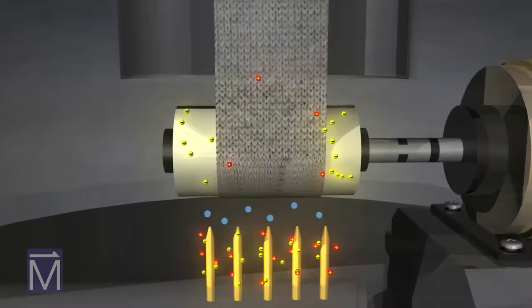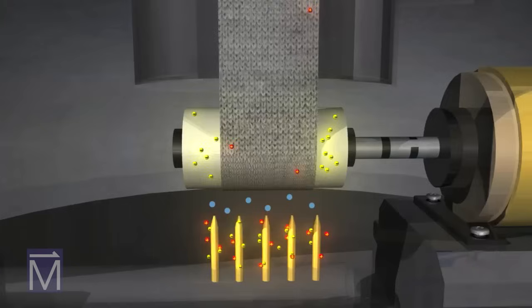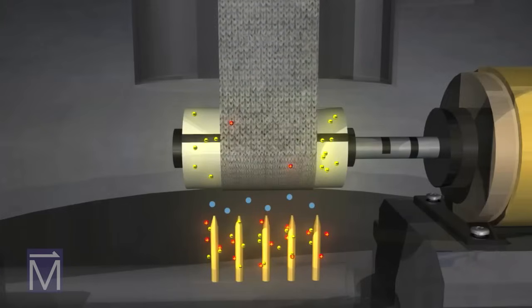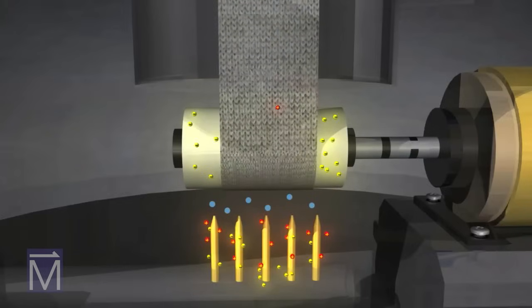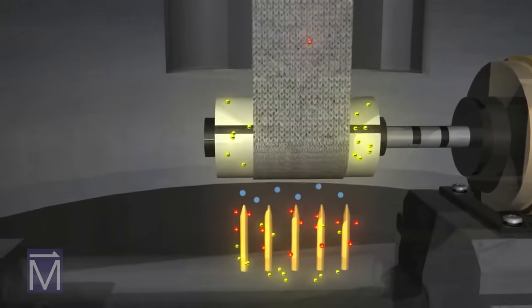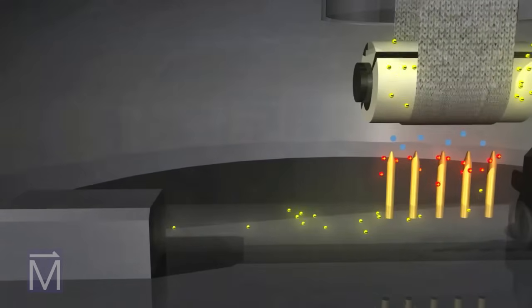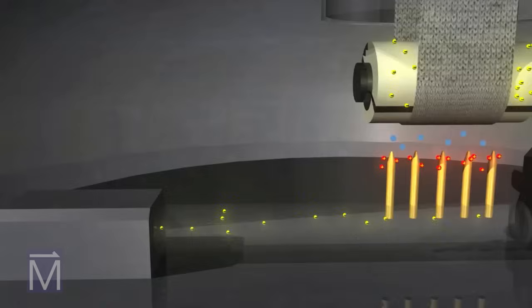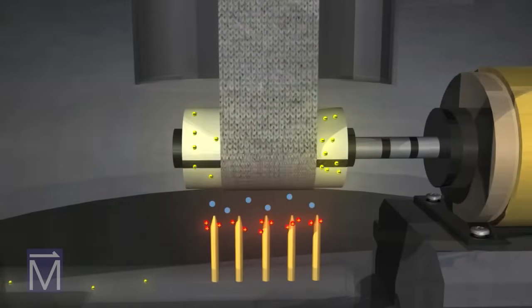Meanwhile, something else is going on in the metal comb positioned just under the roller. Metal is a great conductor of electricity, meaning electrons move very easily through it. Because like charges repel each other, the large amount of electrons that have built up in the roller repel electrons away from the tips of the metal comb, leaving those comb tips with a positive charge.